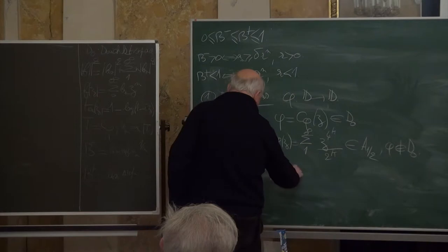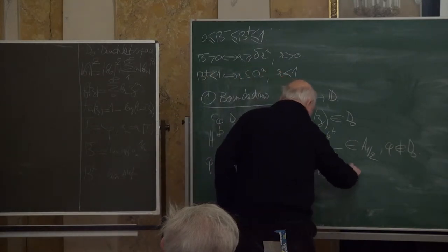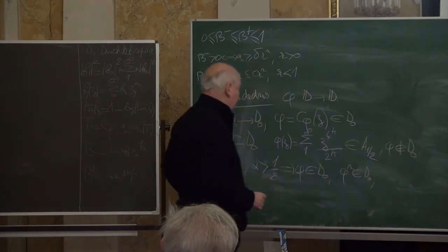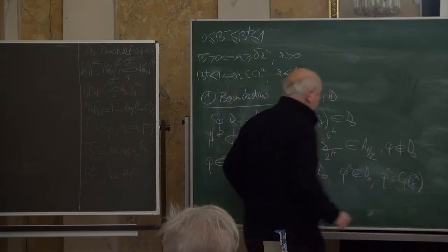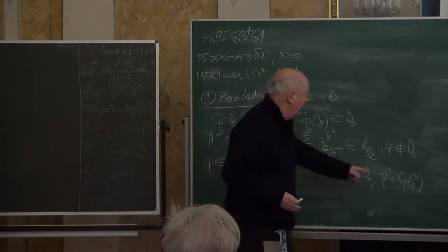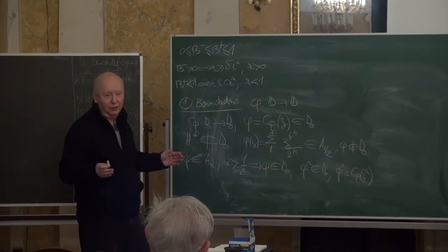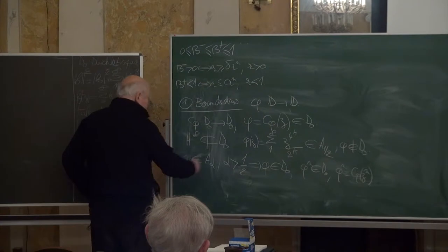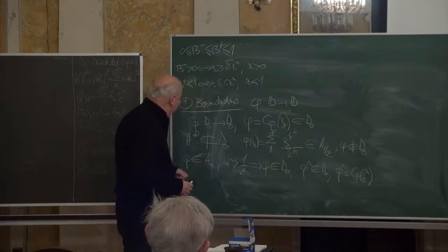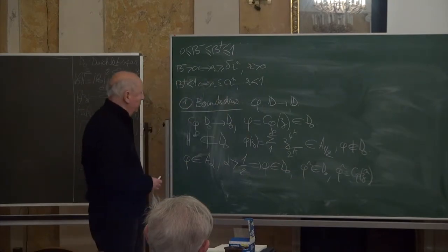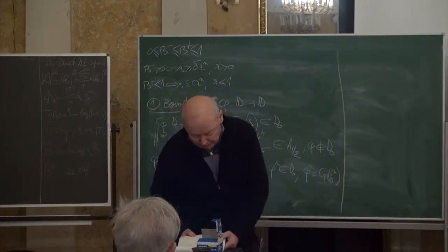If we take a function which is slightly more regular — say analytic Lipschitz-α with α > 1/2 — then it is easy to see that φ belongs to D₀, as do all its powers φ^n. Since C_φ of z^n is φ^n, at least C_φ maps polynomials to D₀. We might naively think polynomials are dense in D₀ so everything is fine, but that is not the case. There are examples where α < 1 for which functions in the Lipschitz-α class do not induce a bounded composition operator.